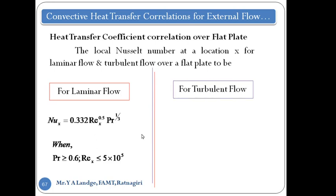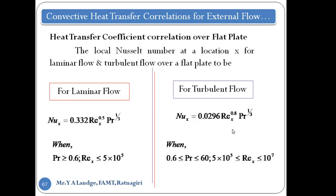For turbulent flow, the Nusselt number correlation is: Nu_x equals 0.0296 times Re_x to the power 0.8 times Pr to the power one-third. The condition is that the Prandtl number should be greater than 0.6 and less than 60, and the Reynolds number should be between 5 times 10 to the 5 and 10 to the 7.